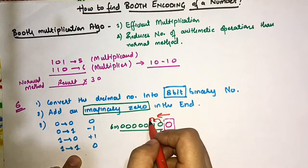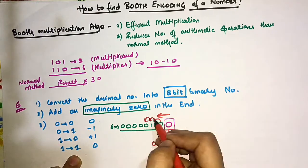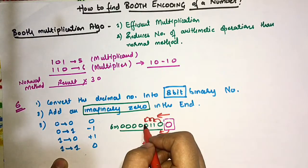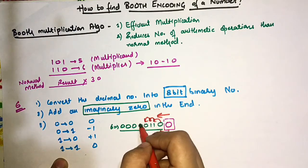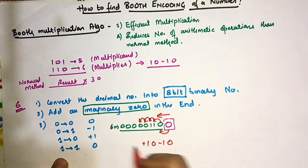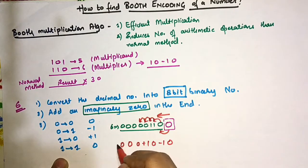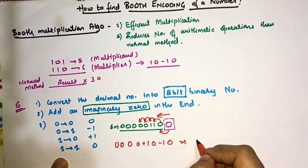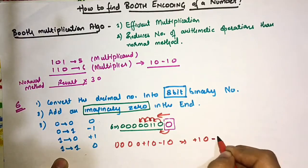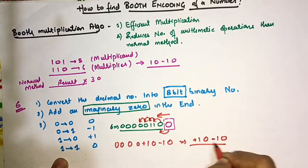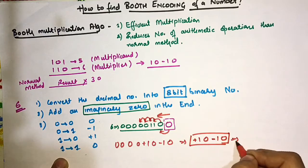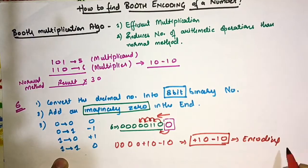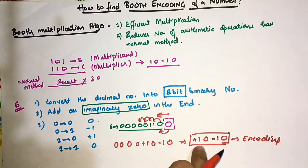Continuing the pairwise scan from right to left: for 0→1 write −1; for 1→1 write 0; for 1→0 write +1; for 0→0 write 0. So the encoding becomes: +1, 0, −1, 0.